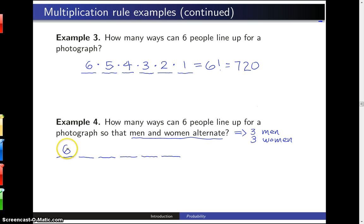Once you've made that decision, if the person here is a man, then there are three women that can be right next to them. If the person here is a woman, then there are three men that can go here.